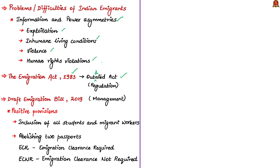In an effort to update and upgrade the Emigration Act of 1983, a Draft Emigration Bill of 2019 was released. The Emigration Act of 1983 is more of a regulation of the emigrant, but the Draft Emigration Bill of 2019 will be more about the management of this emigrant population. Let us see some of the positive provisions of the draft bill. First is the inclusion of all students and migrant workers in the draft bill.